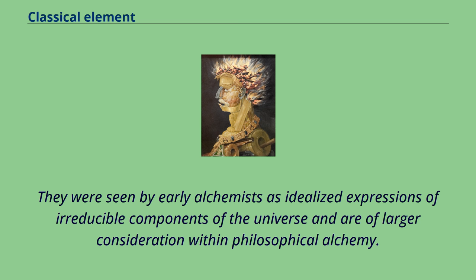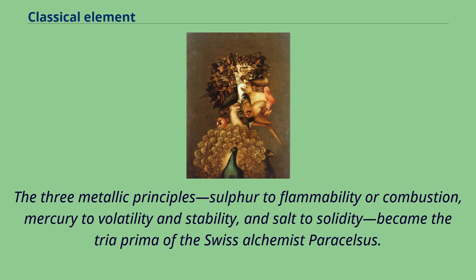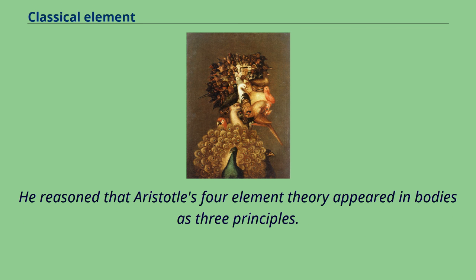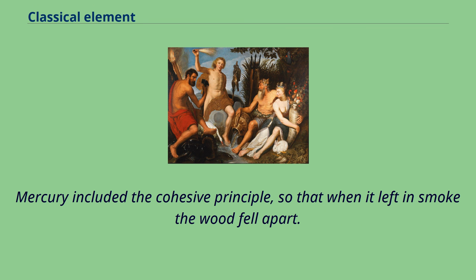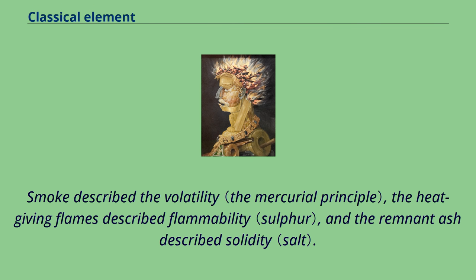The three metallic principles — sulfur for flammability or combustion, mercury for volatility and stability, and salt for solidity — became the tria prima of the Swiss alchemist Paracelsus. He reasoned that Aristotle's four-element theory appeared in bodies as three principles. Paracelsus saw these principles as fundamental and justified them by recourse to the description of how wood burns in fire. Mercury included the cohesive principle, so that when it left in smoke the wood fell apart. Smoke described the volatility, the heat-giving flames described flammability, and the remnant ash described solidity.